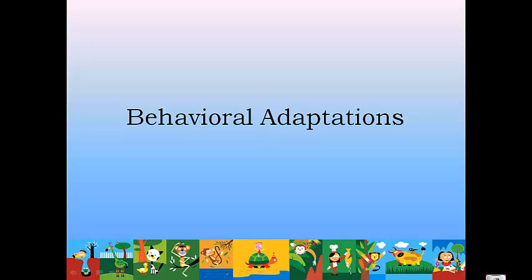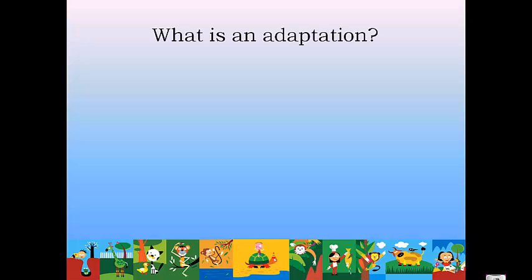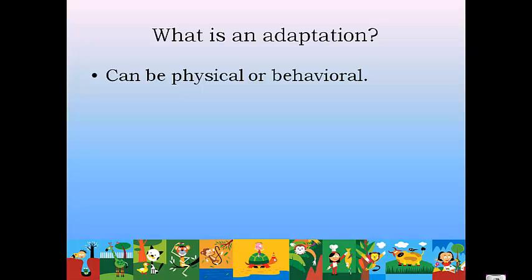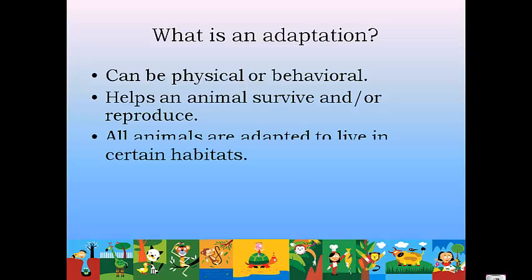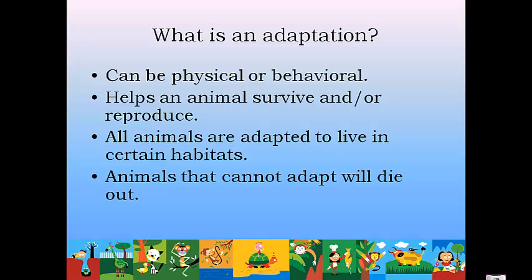Today we're going to talk about behavioral adaptations. An adaptation can be physical or behavioral — an actual physical characteristic or some sort of behavior. It helps an animal to survive or reproduce. All animals are adapted to live in certain habitats where they survive and reproduce. If an animal cannot adapt to its habitat, it will eventually die out.